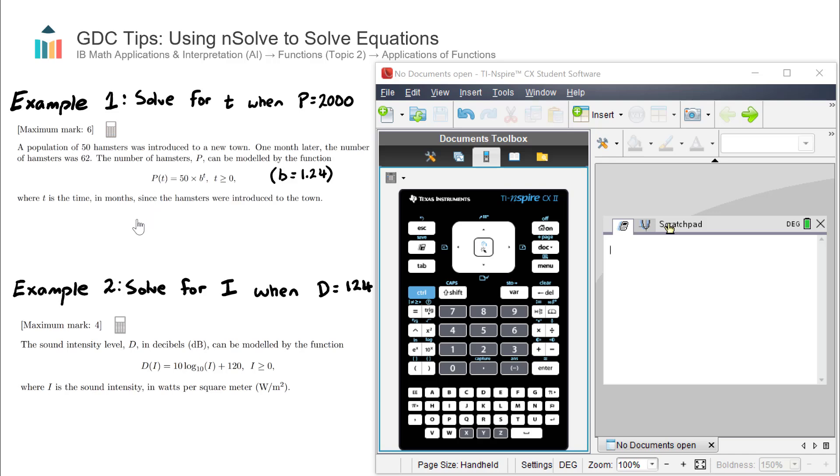If I substitute this value, my equation would now look like this: 2000 = 50 × 1.24^t, where B is 1.24 as we found in prior parts.